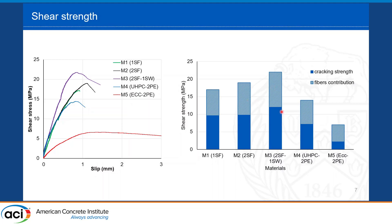Mix 4 and Mix 5 both showed much lower shear strength. For Mix 4, this is due to the lower cracking strength of the matrix, which cracked much earlier than the first three materials. Additionally, the contribution from polyethylene fibers is lower than from steel fibers, even at the same 2% volume fraction, resulting in worse shear behavior.